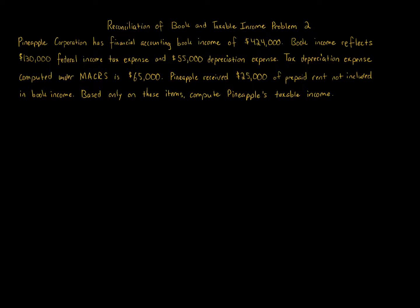This is a reconciliation of book and taxable income question. You're told what the financial accounting book income is and you're asked about the taxable income. Usually you're given the financial accounting book income and you have to get to taxable income. We're looking at GAAP or book income versus tax. Most of the rules are equal, but not all rules are equal when it comes to considering when income is included or expenses are recorded. There are similarities but also differences, and these differences result in what we call permanent or temporary differences.